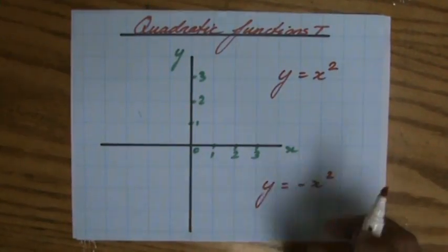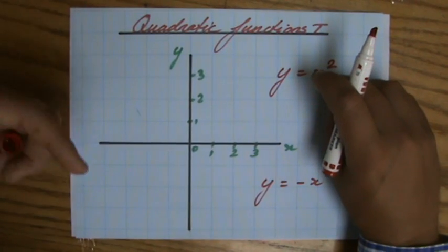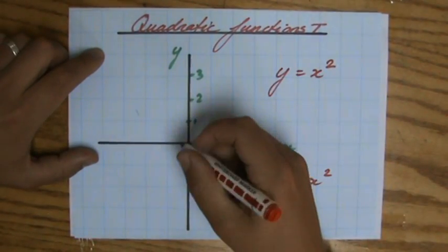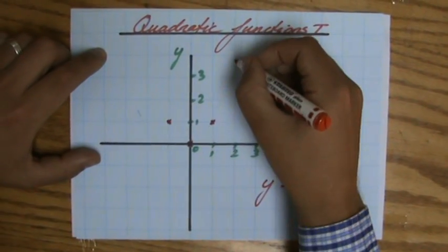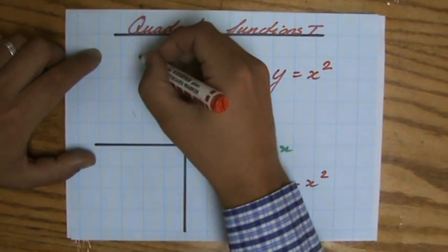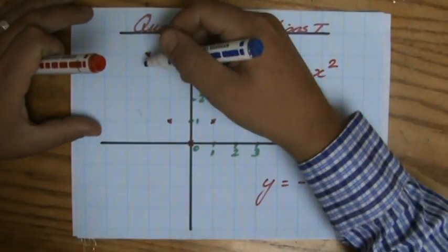If I graph this, the quadratic function, the parabola y equals x squared, I'll have a point here at zero zero. One one, two four, minus two four, three nine. Doesn't even fit anymore. And if I would graph it, this takes some practice.